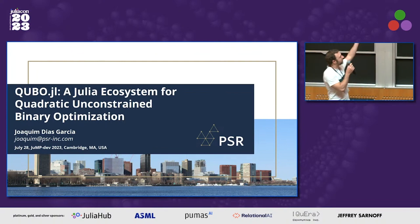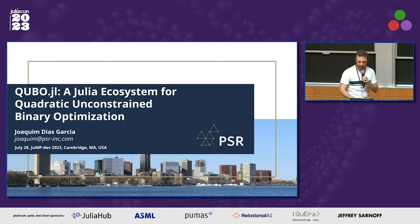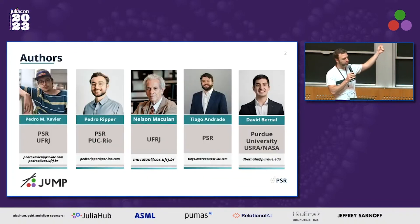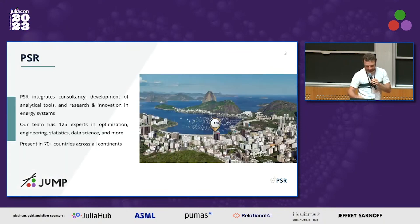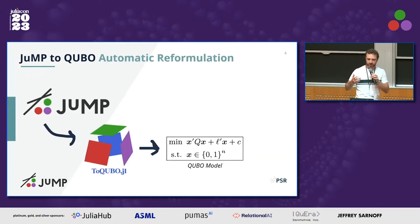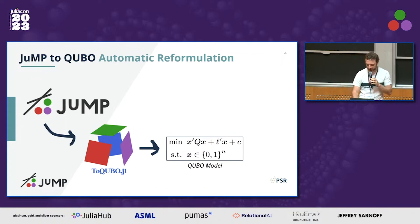Kubo.jl — we didn't change the name. The previous name was 2kubo, which was the package for doing reformulations to mathematical programming. QUBOs are quadratic unconstrained binary optimization problems, and now we created a meta-package to encapsulate the whole ecosystem. I have a few co-authors: Pedro and Pedro from PSR, Nelson from the State University in Rio, Thiago from PSR, and David Bernal from Purdue and NASA. PSR is a company in Brazil that works with power systems, consulting, and software development. This is the JuMP-to-QUBO pipeline — you write the JuMP model, you call the 2kubo thing, and you can use these QUBO formulations in your QUBO solvers.